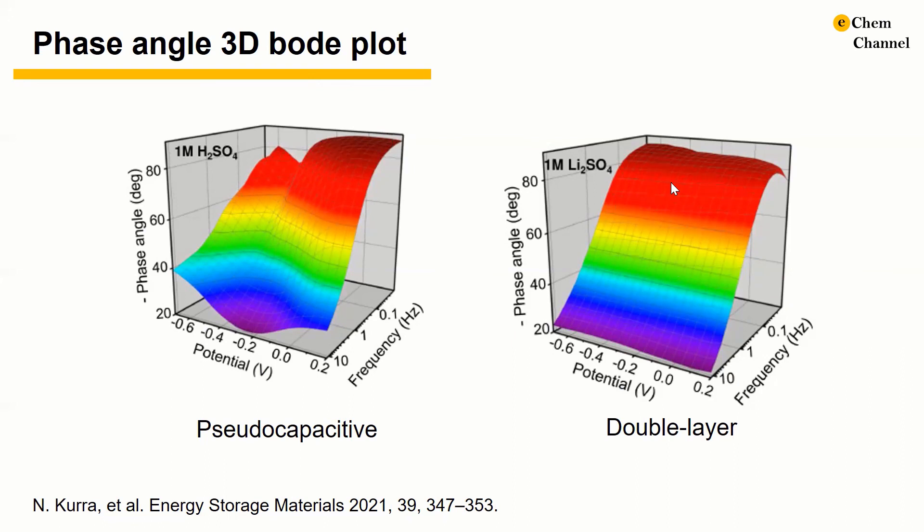In comparison, in the neutral aqueous electrolyte lithium sulfate, due to the capacitive process in the neutral electrolyte, phase angle maps remain flat at low frequencies and gradually decrease at high frequencies.